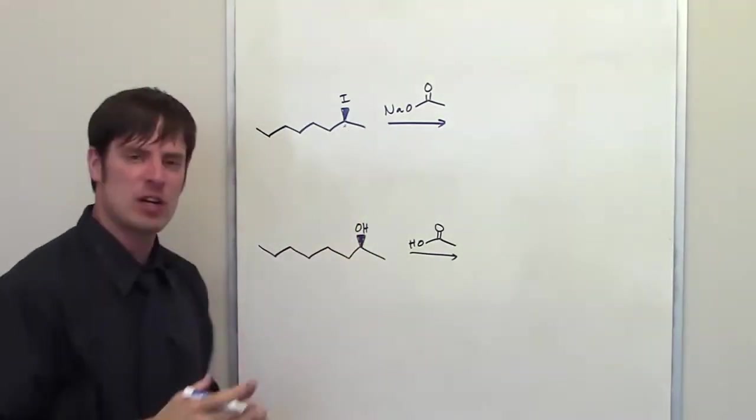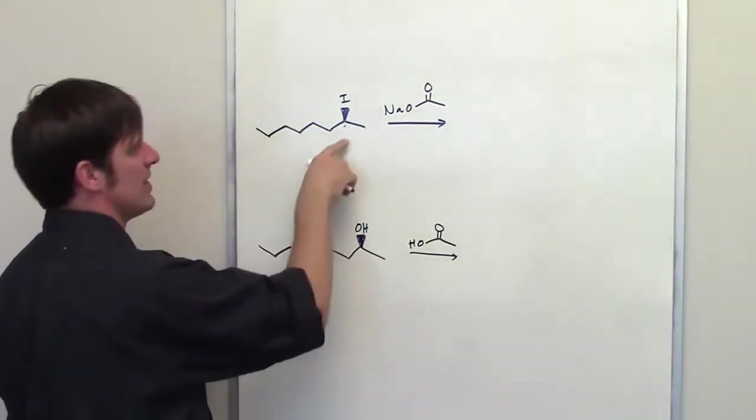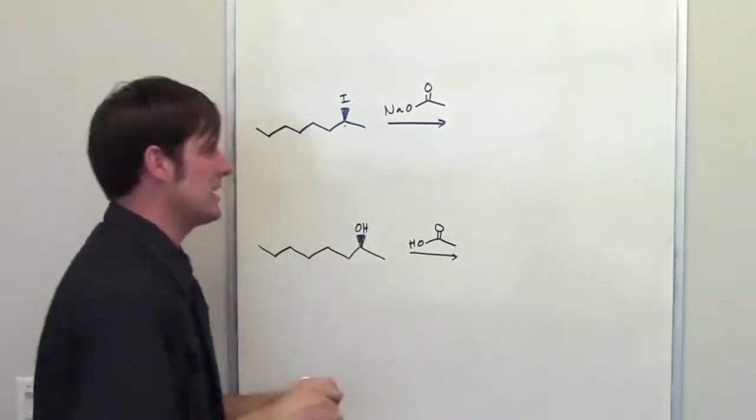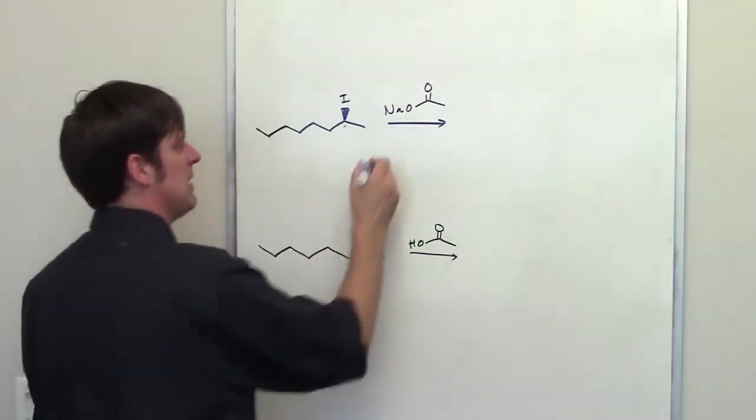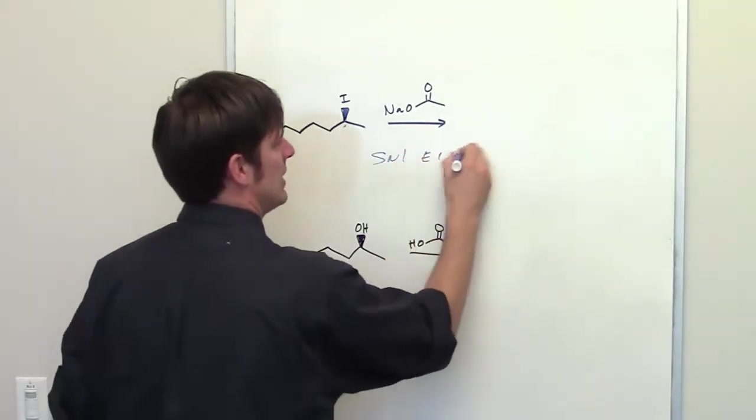Here's my carbon stuck to my leaving group. Is it primary, secondary, or tertiary? There's a carbon to the right, carbon to the left. You can see that's 2, secondary, which means it could be potentially any of the above. I'll write them all down: SN1, E1, SN2, and E2.